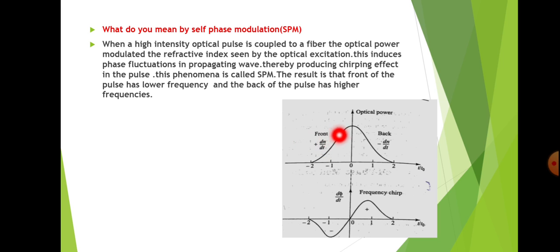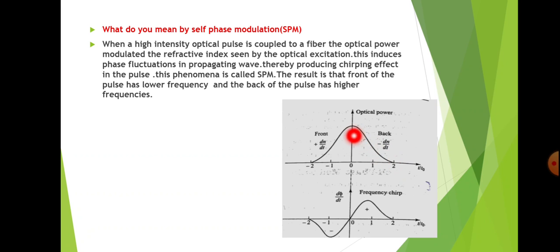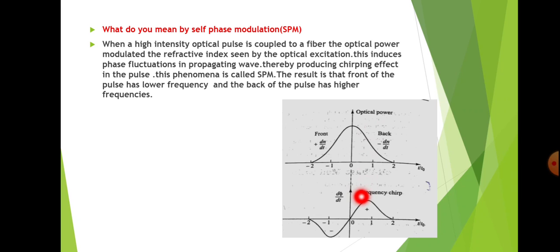Consider an optical pulse transmitted through the optical fiber. It has a front end denoted by +dn/dt — the variation of refractive index — and a back end denoted by -dn/dt. Due to self-phase modulation, there will be some changes in the optical power and the refractive index profile, and frequency chirping takes place.